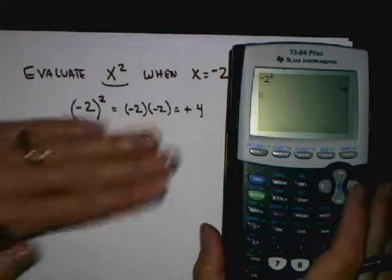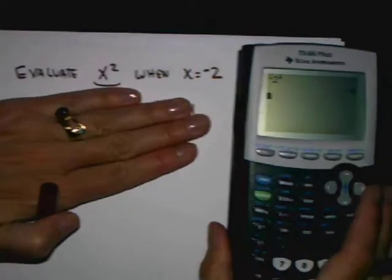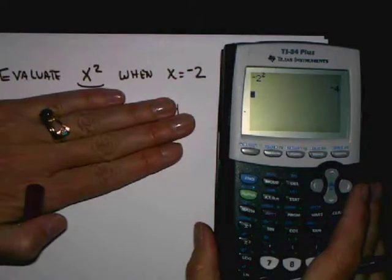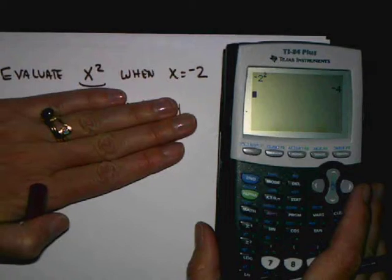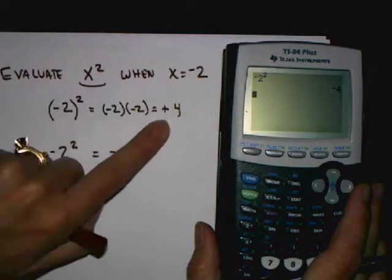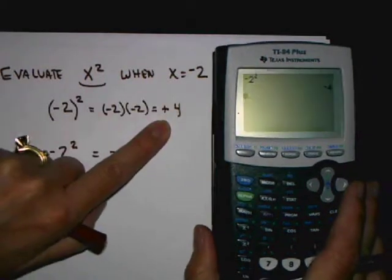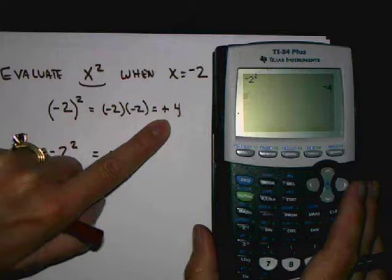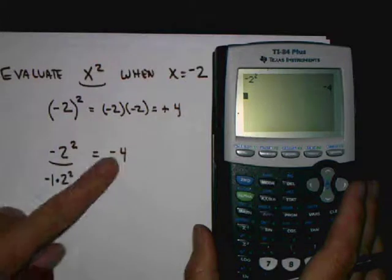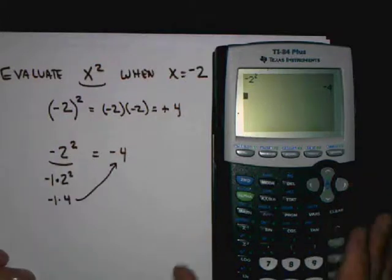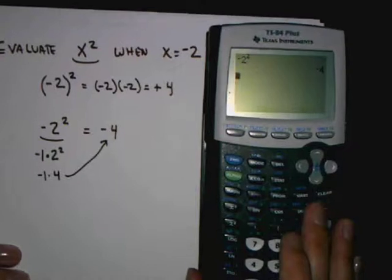So if the problem says evaluate the expression x squared when x equals negative 2, the correct answer, what you should get, is positive 4. If you're not careful of how you enter that in your calculator, it might seem that the calculator spits out the answer negative 4.